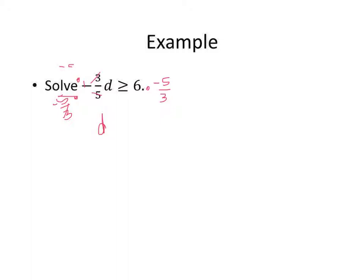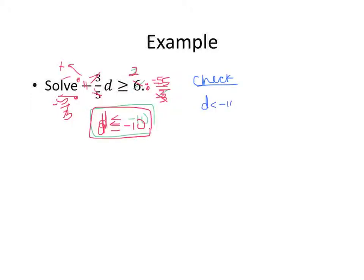Because you multiplied by a negative, we're going to reverse the inequality, so it becomes less than or equal to. Simplifying, we get negative 10. So D is less than or equal to negative 10 is your answer.